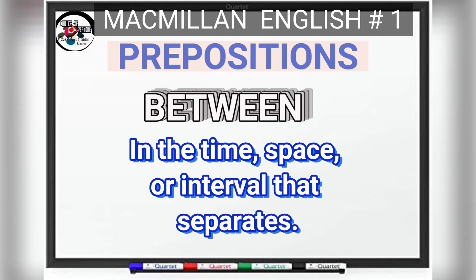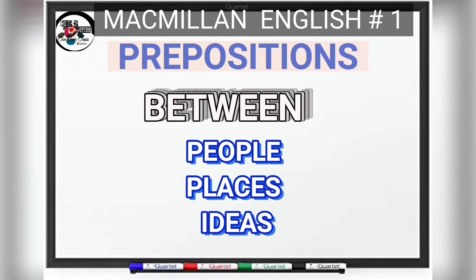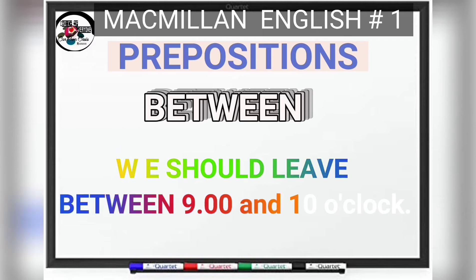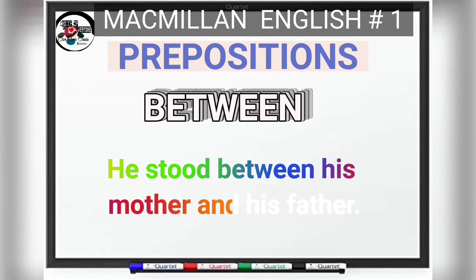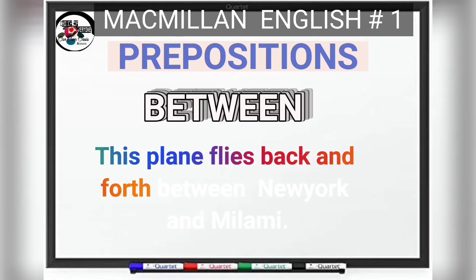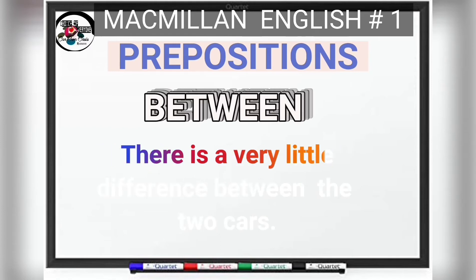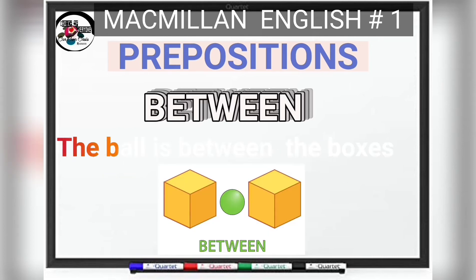BETWEEN is a preposition meaning in the time, space, or interval that separates two things, people, places, or ideas. There is no need for an additional preposition with BETWEEN — no ON BETWEEN, no THROUGH BETWEEN. Examples: we should leave between 9 and 10 o'clock. He stood between his mother and his father. This plane flies back and forth between New York and Miami. There is very little difference between the two cars. The ball is between the boxes.